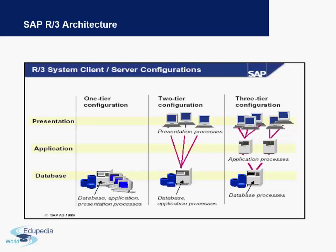Let's look at the R3 architecture. SAP provides a three-tier configuration, meaning the database, the application, and the presentation are three different layers. You have a secure server where your database — your data and information — is stored. Application processes form the middle tier, and finally the presentation layer is what you see when using your laptop, computer, or iPad to work on SAP.